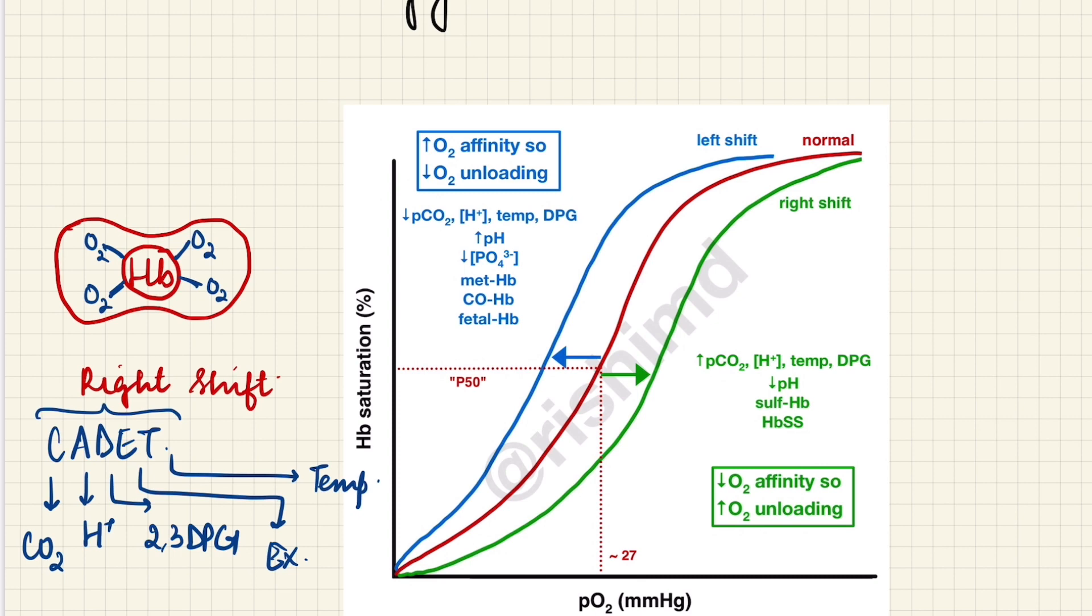This means the association between the hemoglobin and oxygen has decreased, and the curve has shifted to the right. This is known as right shift. So all these factors are responsible for the right shift of the curve, or the decreased association of oxygen with hemoglobin, or the increased dissociation.